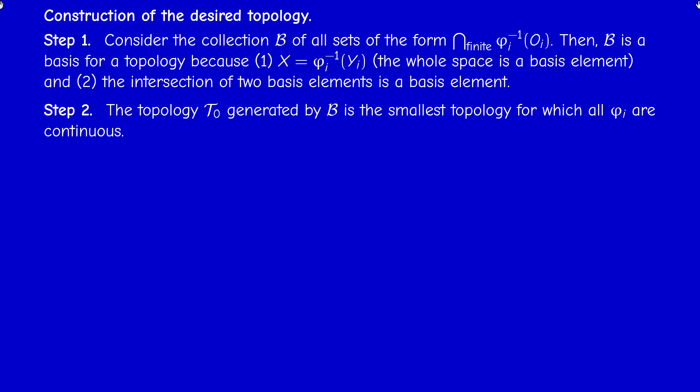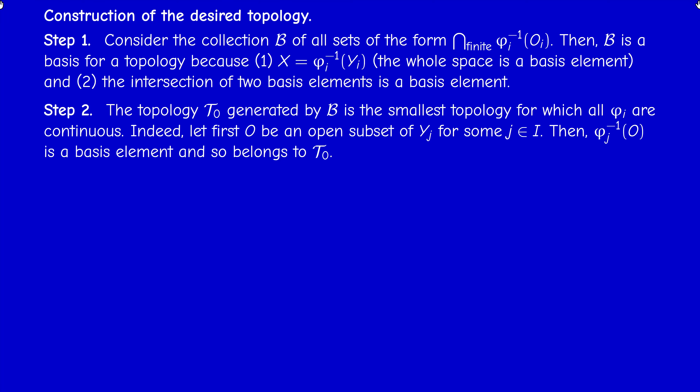This topology T0 will be our required topology. To prove T0 satisfies the requirement, we prove two things: any phi_i is continuous with respect to T0, and any topology for which each phi_i is continuous must contain T0. The first point is easy: if we take an open set O of Y_J, then phi_J⁻¹(O) is a basis element — it's a finite intersection of just one element — and therefore belongs to T0, since T0 contains B.